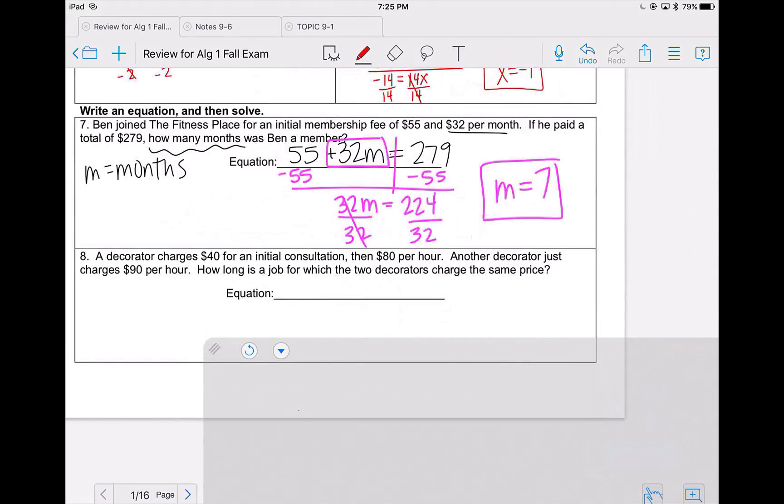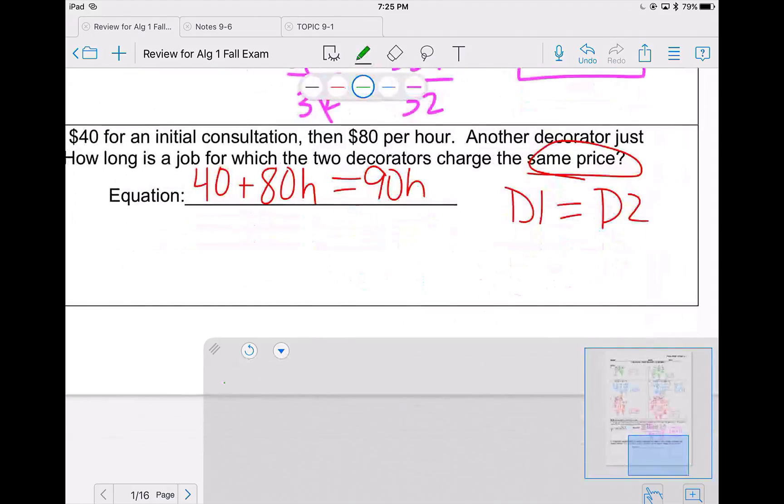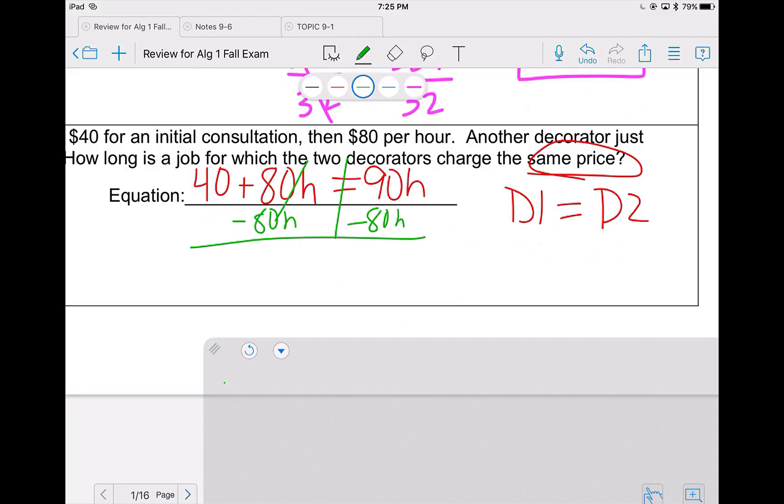Problem 8 tells us that the first decorator charges $40 for initial consultation and then $80 per hour. Another decorator just charges $90 per hour. How long is the job for where the two decorators charge the same price? So where does decorator 1 equal decorator 2? Decorator 1 charges $40 for the consultation and $80 per hour. Decorator 2 charges $90 per hour. In order to solve, I move 80 hours because it's smaller. So 40 equals 10H. Divide by 10, and 40 divided by 10 is 4. So 4 hours before they equal the same amount.